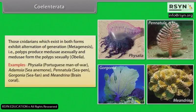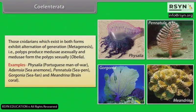Examples: physalia, also known as Portuguese man of war; adamsia, also known as sea anemone; pennatula, also known as sea pen; gorgonia, also known as sea fan; and meandrina, also known as brain coral.